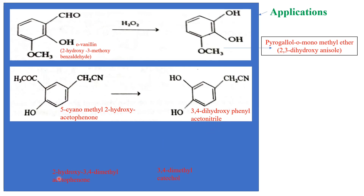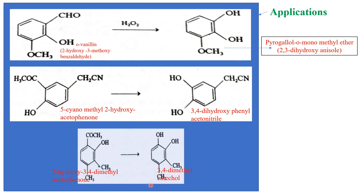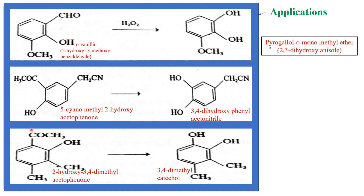The third application is conversion of 2-hydroxy-3,4-dimethylacetophenone to 3,4-dimethylcatechol. The parent compound is acetophenone with a hydroxy group at position 2 and dimethyl groups at positions 3 and 4. Treated with alkaline hydrogen peroxide, the ketone is converted to a hydroxy group, giving 3,4-dimethylcatechol.